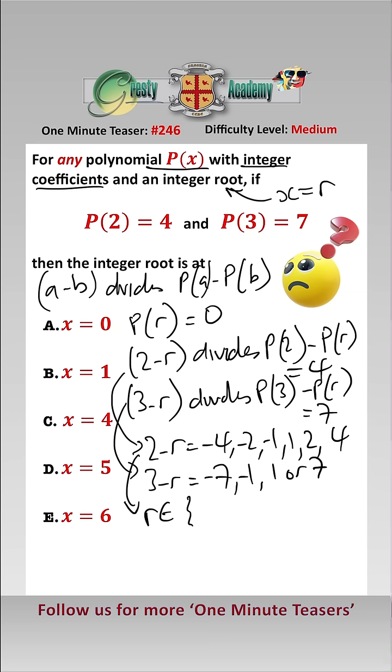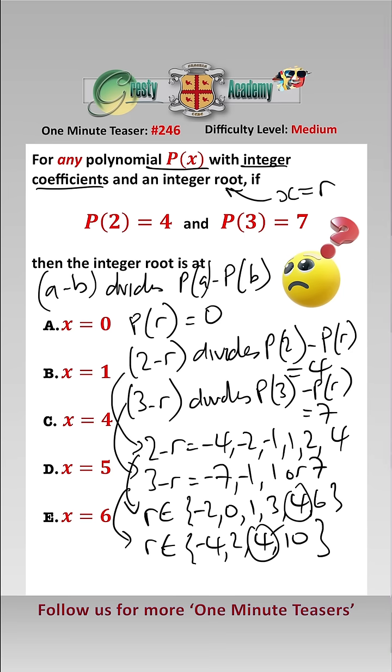is contained in the set {-2, 0, 1, 3, 4, 6}, and from this one we know that r is contained in the set {-4, 2, 4, 10}. There is only one number in both of those sets, which is 4, so therefore the integer root must be at x equals 4, answer C.